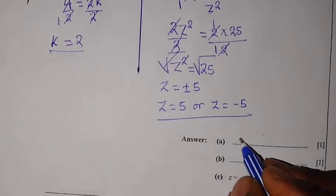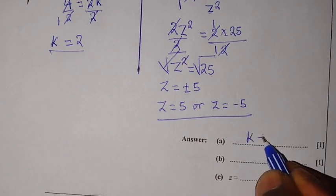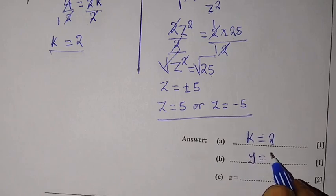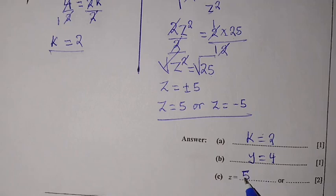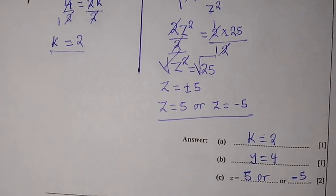To summarize our answers: for part a, k equals 2; for part b, y equals 4; and for part c, z equals 5 or negative 5. We have come to the end of our lesson. Thank you so much everybody for taking the time to view this content. This has been your presenter, Mr. Mrenga. Bye-bye.